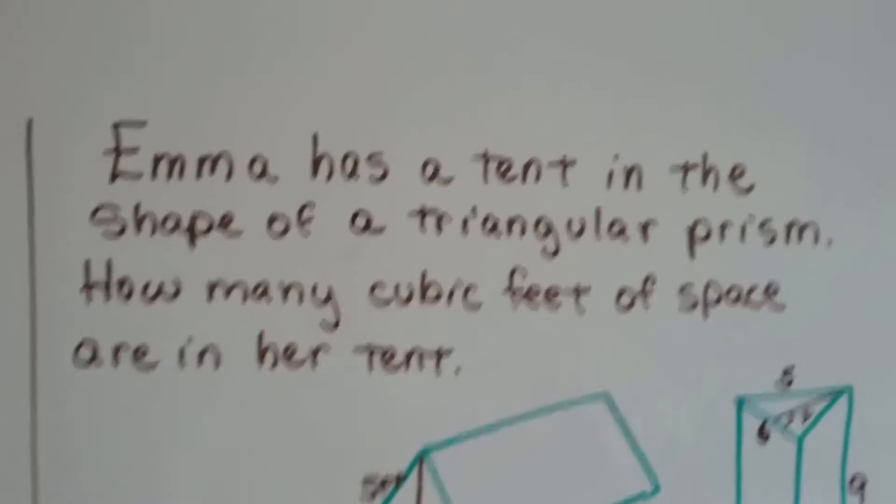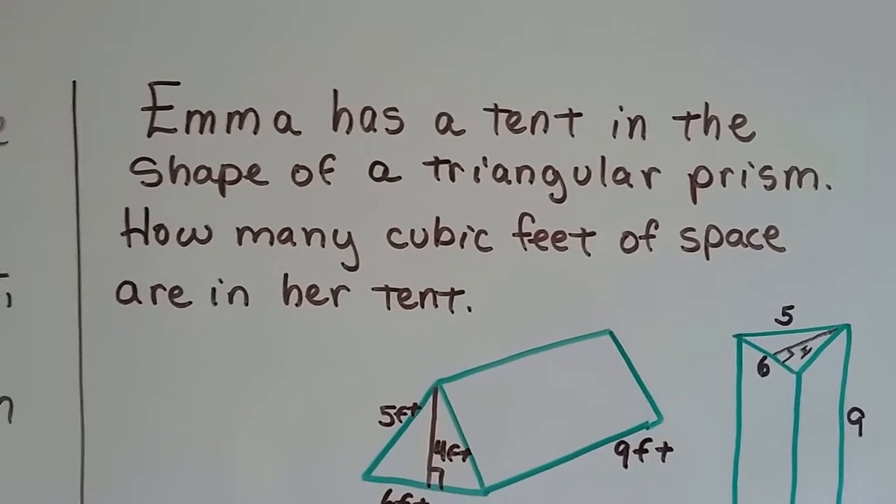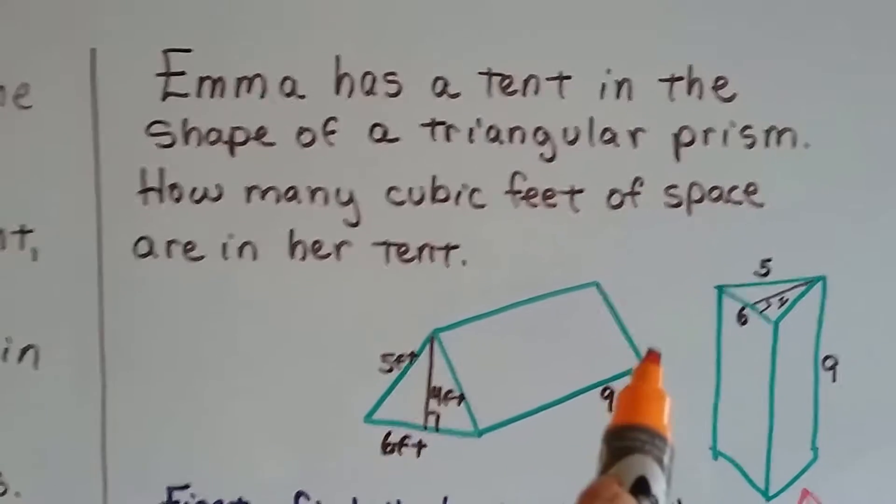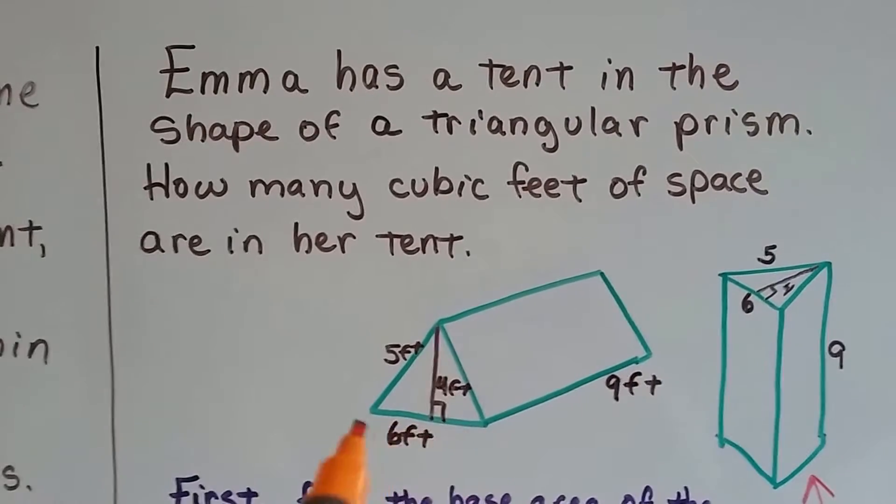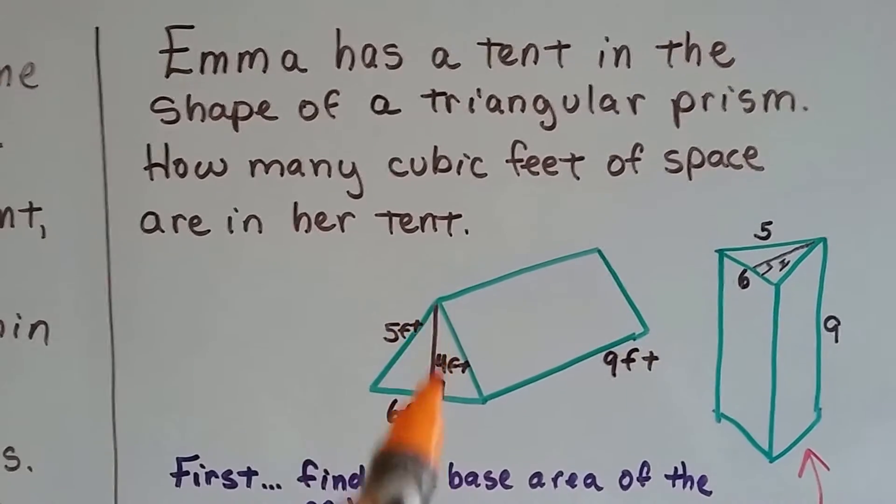Emma has a tent in the shape of a triangular prism. How many cubic feet of space are in her tent? So it's showing that the tent is nine feet long this way, six feet across here, five feet on the slant here, and four feet straight up for its height.